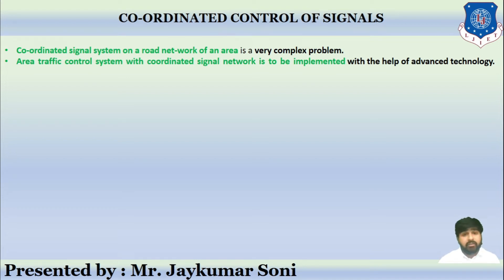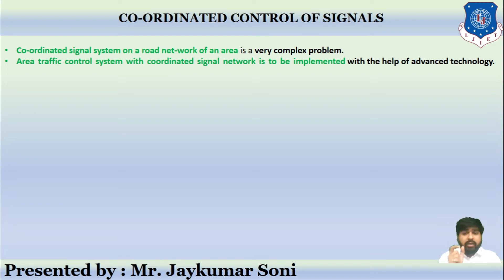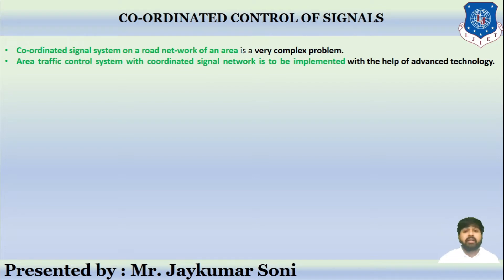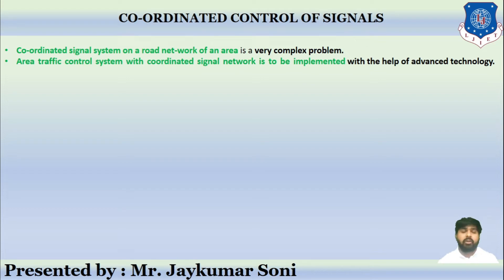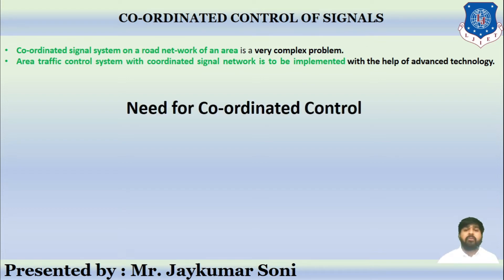A coordinated signal system on a road network of an area is a very complex system. As the name suggests, it requires coordination between various entities in order to establish coordinated control of signals. Area traffic control with a coordinated signal network is to be implemented with the help of advanced technology.